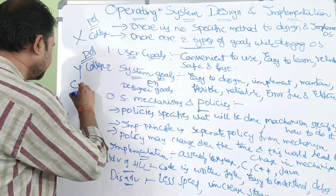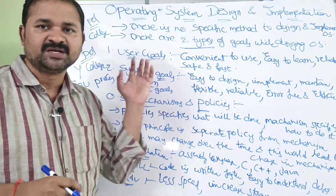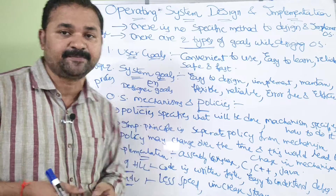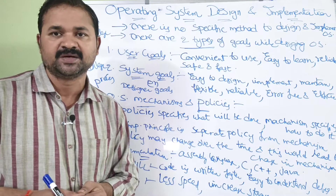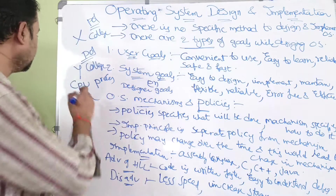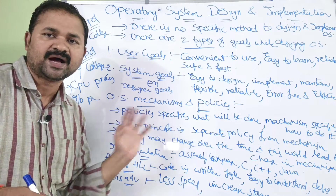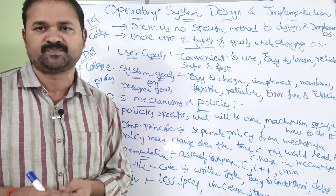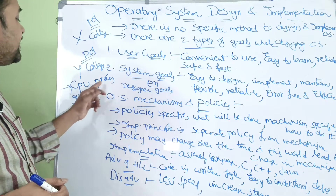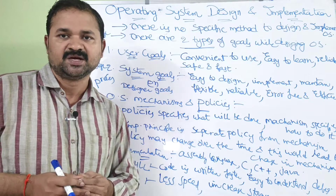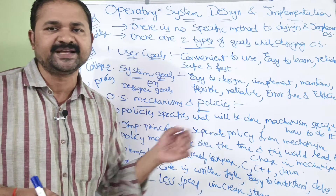Let us take an example. We have two types of processes: CPU process and IO process. A CPU process requires more CPU time, whereas an IO process requires more IO time. Let us assume that today our policy is giving more priority to the CPU process and less priority to the IO process. Whereas tomorrow, our policy may be giving more priority to the IO process and less priority to the CPU process. If policy and mechanism are separated, then it is very easy to implement such a change.